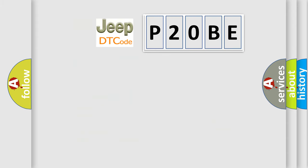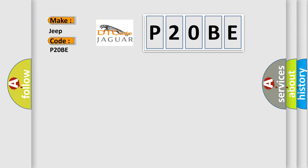So, what does the diagnostic trouble code P2OBE interpret specifically for Jeep car manufacturers? The basic definition is Constant Vacuum Hublock CVH Solenoid Circuit Open.